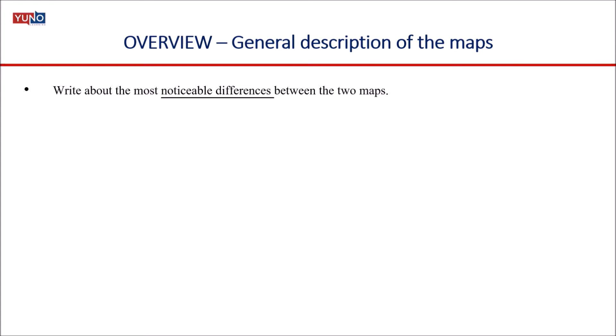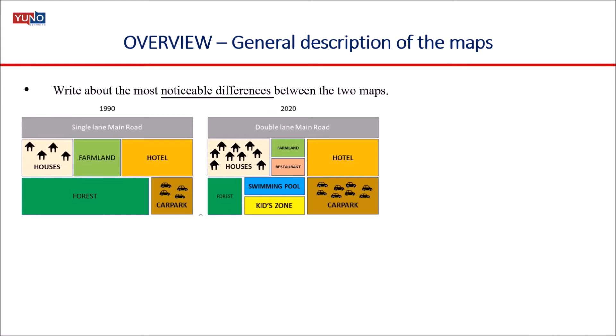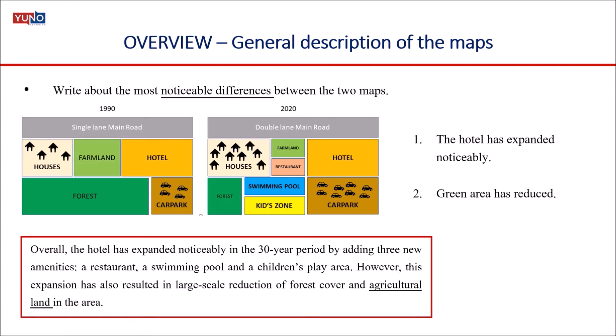In the overview, give a general description of the maps and write about the most noticeable differences. If you look at the two maps, there are two major changes: one, the hotel has expanded noticeably, increasing its infrastructure and amenities; and two, the green area has reduced to a great extent. So in the overview you can write: 'Overall, the hotel has expanded noticeably in the 30-year period by adding three new amenities — a restaurant, a swimming pool, and a children's play area. However, this expansion has also resulted in large-scale reduction of forest cover and agricultural land in the area.'